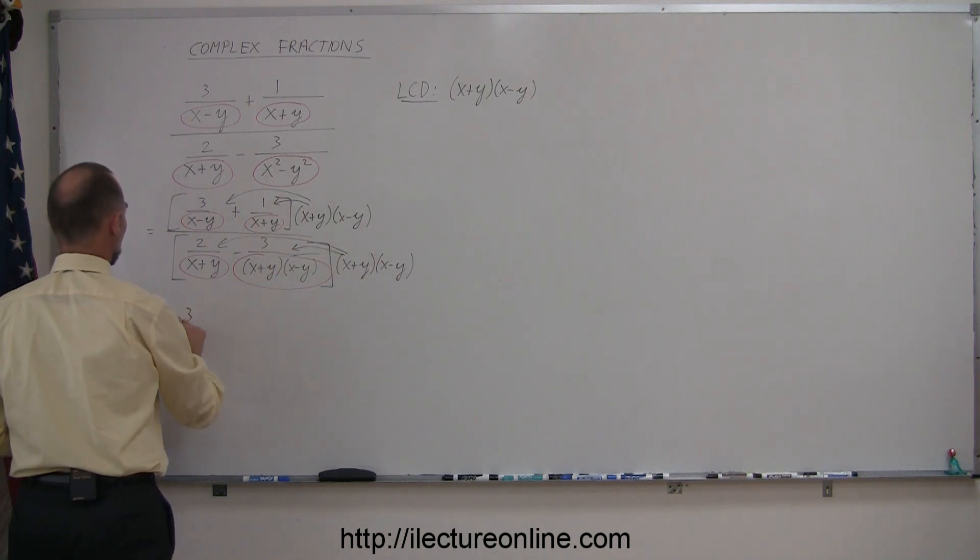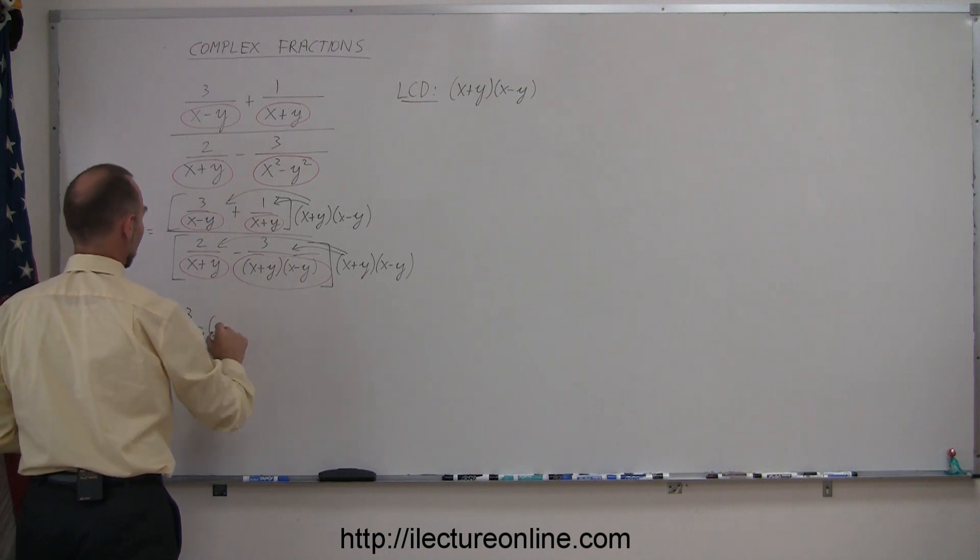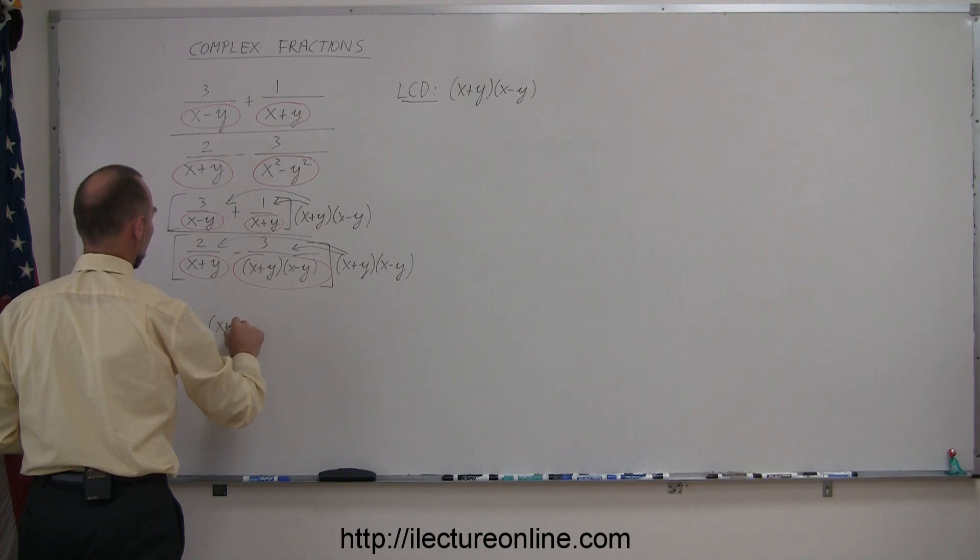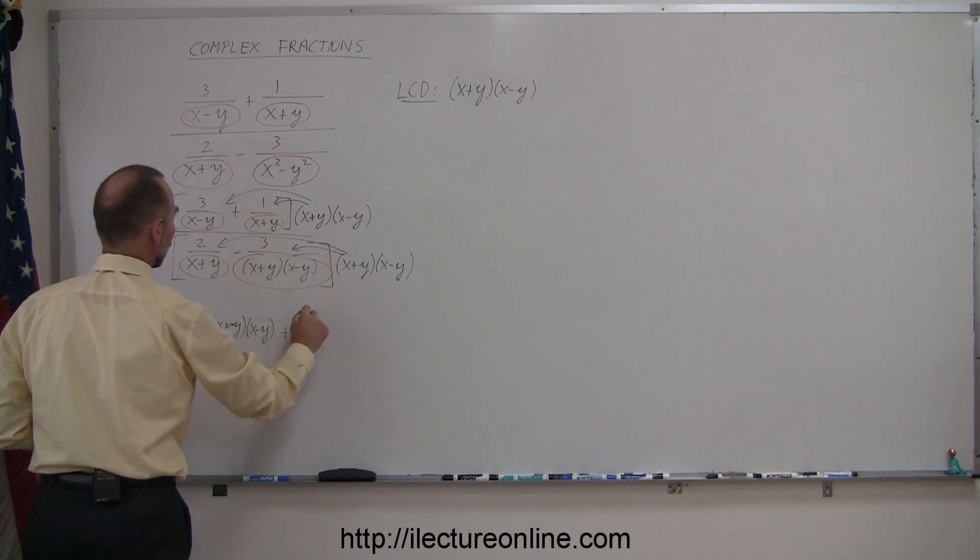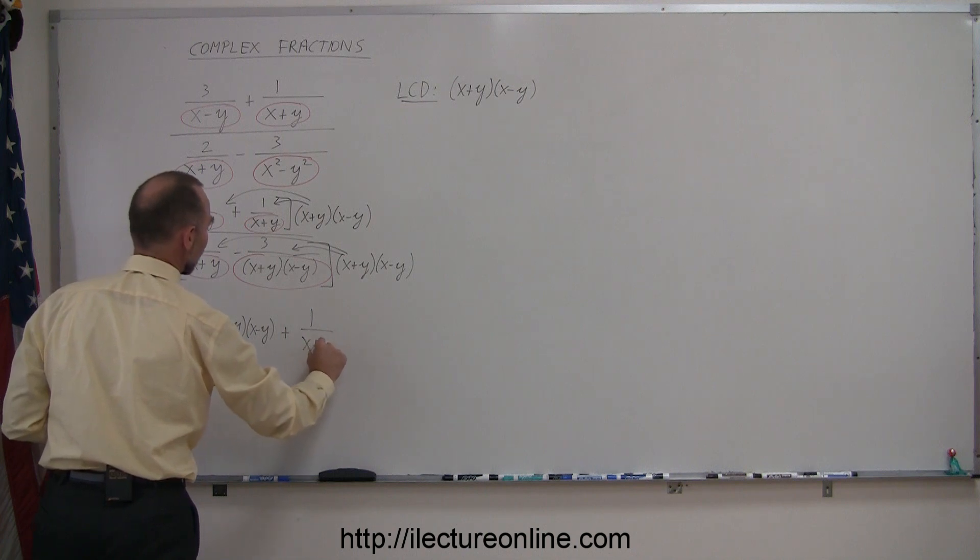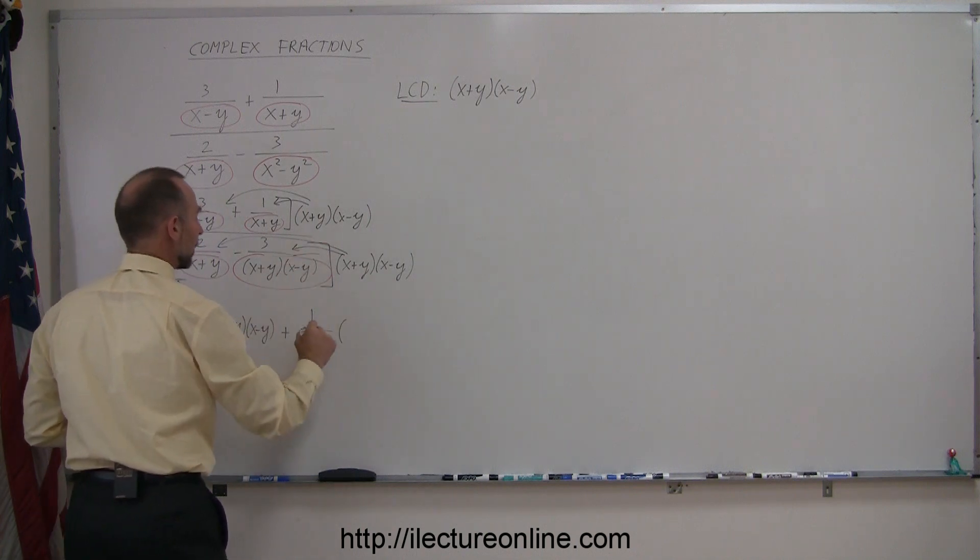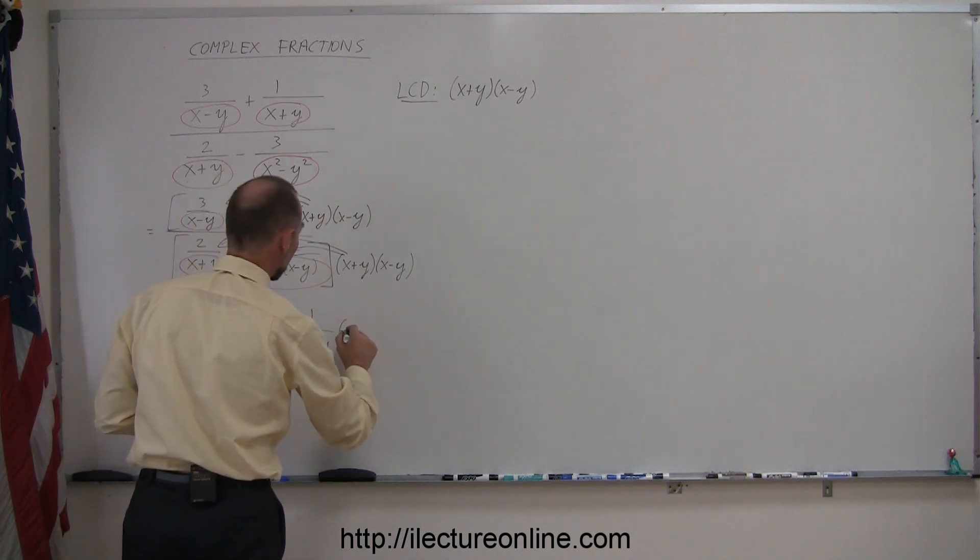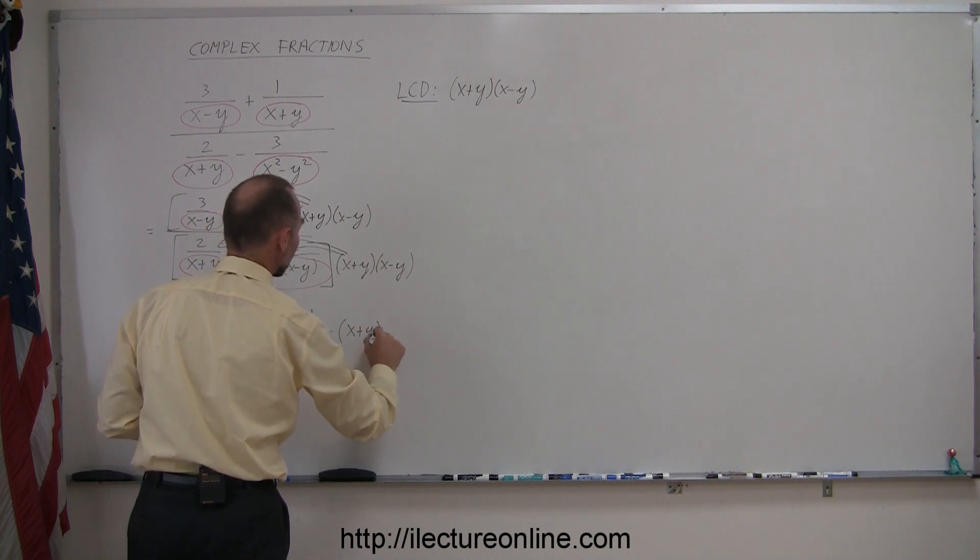So this becomes 3 over x minus y, times x plus y, times x minus y, plus 1 over x plus y, times the common denominator, or the lowest common denominator of x plus y, times x minus y.